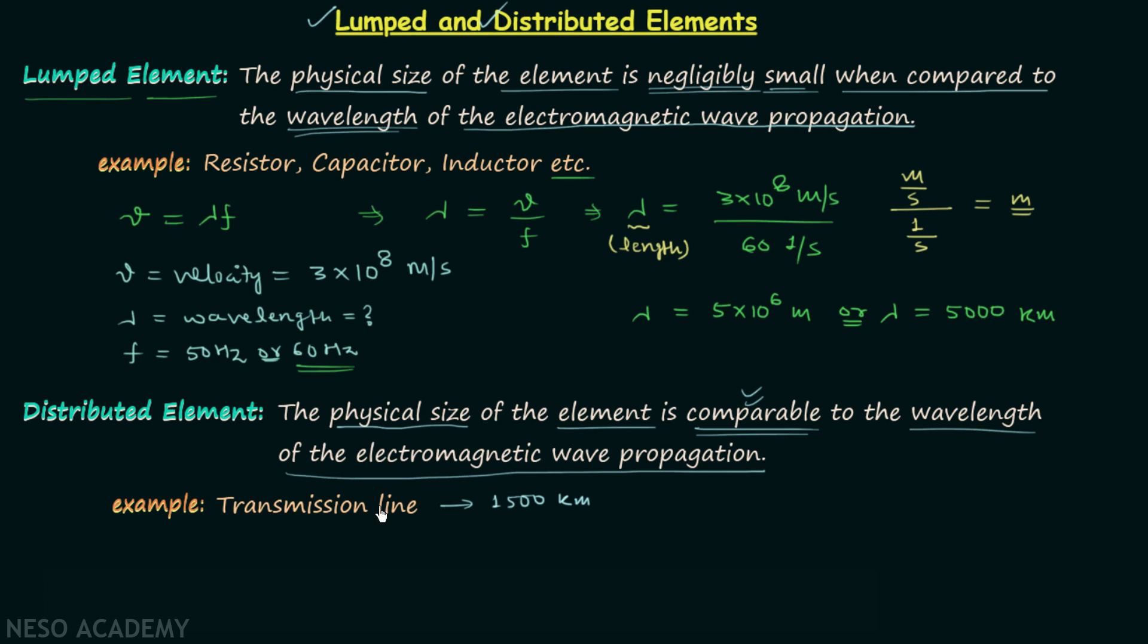So I hope you now understand what are lumped and distributed elements. Now there is one important point which you should remember: KCL and KVL are applicable only when the elements are lumped. When the elements are distributed, we cannot apply KCL and KVL. And till now you have seen we have applied KCL and KVL when the network is having resistor, capacitor, inductor, and other such lumped elements.